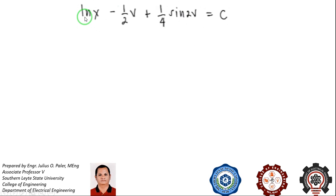Integrating the entire equation will give us ln of x minus 1 half of v plus 1 fourth sine of 2v equal to C. Eliminating all the fractions, we multiply the equation by 4. It will give us 4 ln of x minus 2v plus sine of 2v equal to 4C.